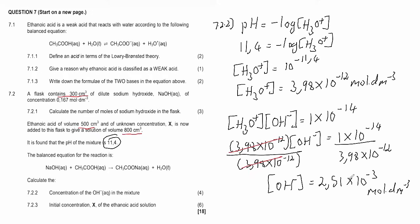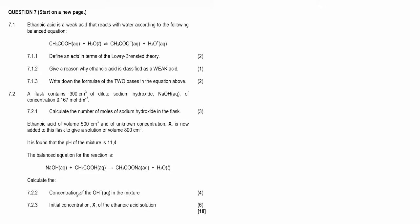If your calculator doesn't use scientific notation, the equivalent answer is 0.00251 mol·dm⁻³ — both are the same answer, just written differently. For four marks, that's all you needed to do to calculate the concentration of hydroxide ions in the mixture. Now for question 7.2.3, worth six marks: calculate the initial concentration x of the ethanoic acid solution.